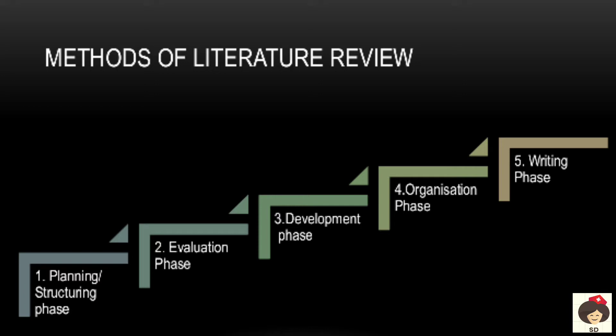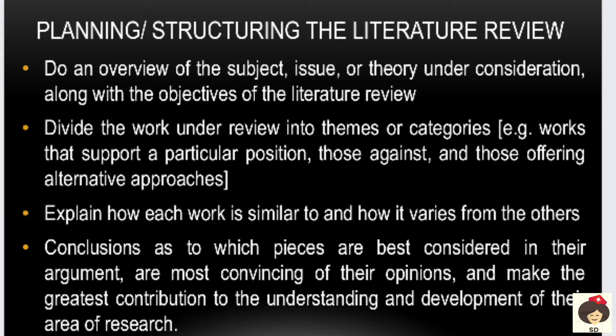There are certain methods we follow in order to do a literature review. These are divided into five phases: the first is the planning or structuring phase, the second is the evaluation phase, the third is the development phase, the fourth is the organization phase, and finally the writing phase.